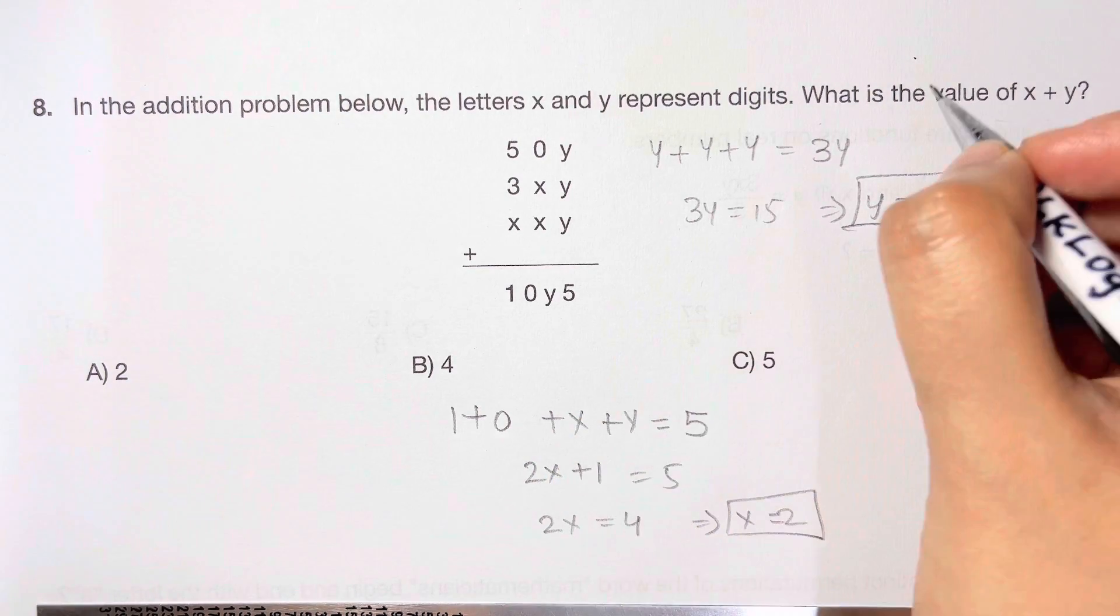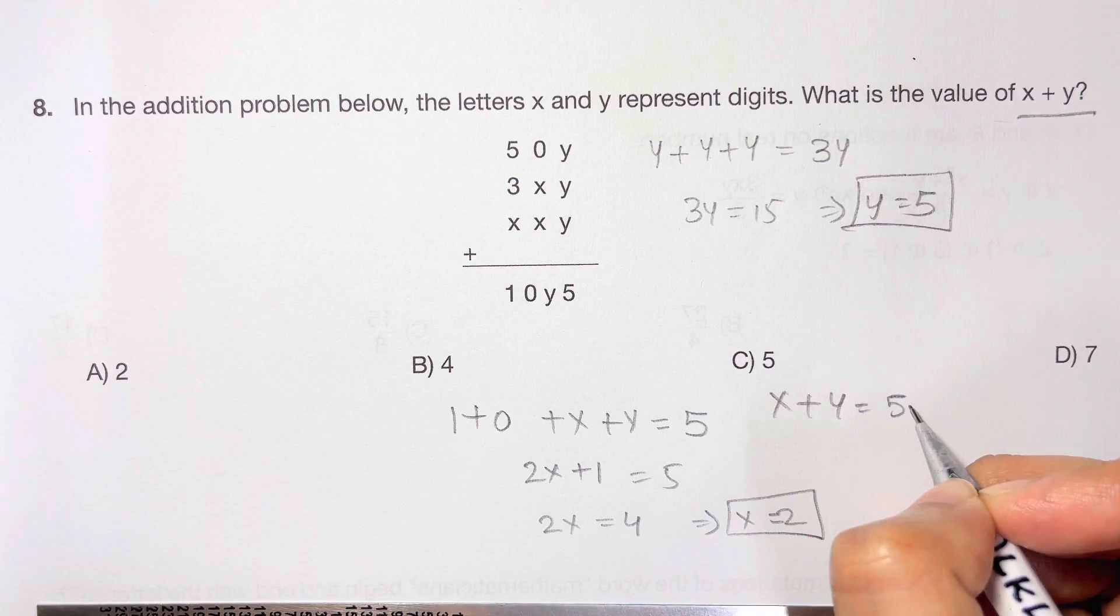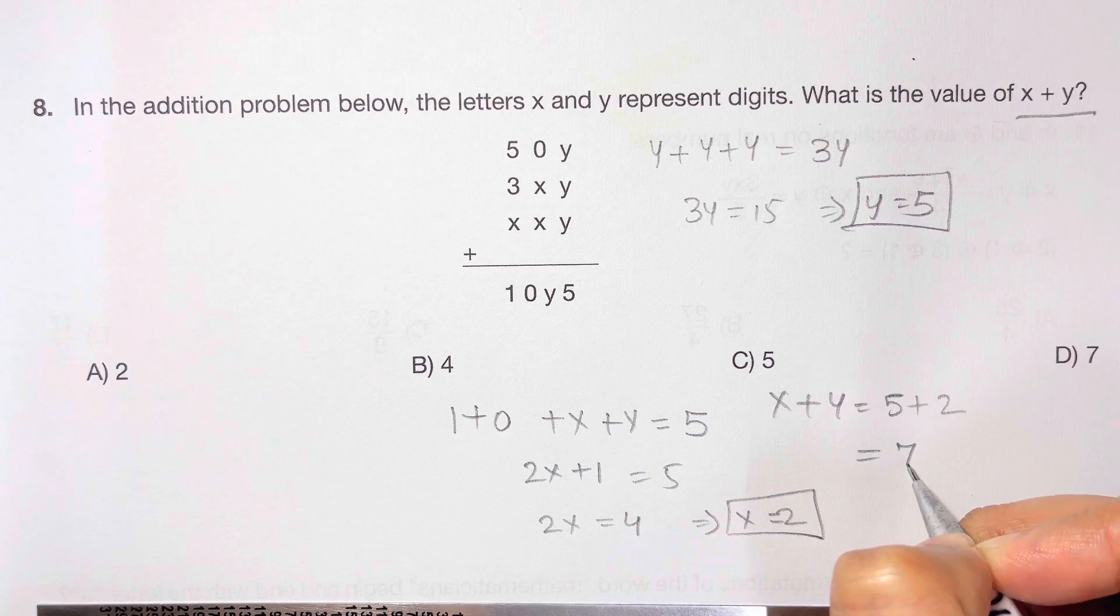So what is x plus y? They are asking x plus y is equal to 5 plus 2, which is equal to 7 and that's your answer choice D.